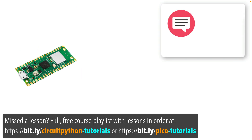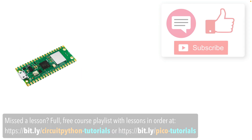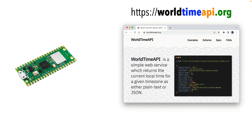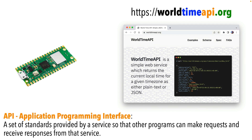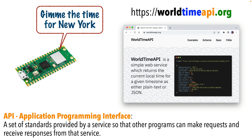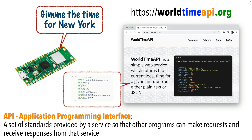Since we're going to set up Wi-Fi on the Pico W, we need somewhere to connect to and get data from. I'm going to suggest we access the time using the website worldtimeapi.org. This is a good first choice because using the internet to get time for a board is a really common thing for makers to do. This site provides what's called an API, or Application Programming Interface. An API is a set of standards provided by a service so that other programs can make requests and receive responses. We're going to write a Python program to make an API call.